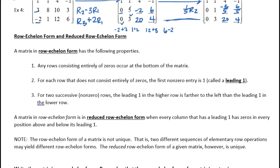A matrix is in row echelon form if it has these properties. Any rows consisting entirely of zeros occur at the bottom. For each row that does not consist entirely of zeros, the first non-zero entry is a one — it's called a leading one.